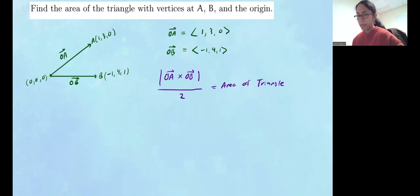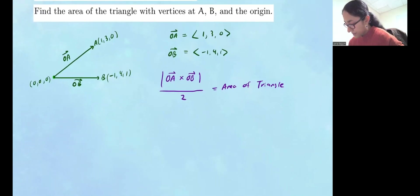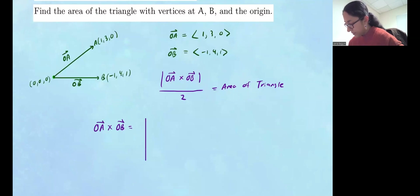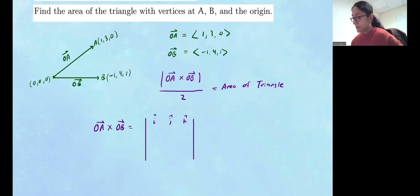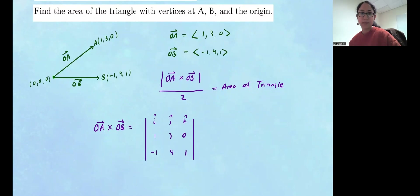So let's do the cross product and then take the magnitude of that vector. OA cross OB is going to be the determinant of a 3 by 3 matrix. The first row will have i, j, and k. The next row we fill in the components of vector OA: 1, 3, 0. In the last row, we fill in the components of vector OB: -1, 4, 1.